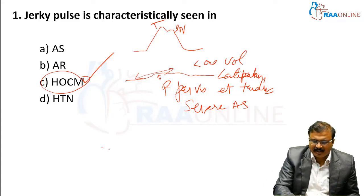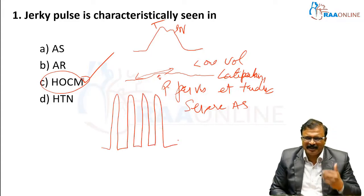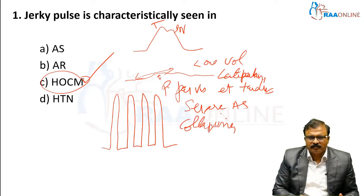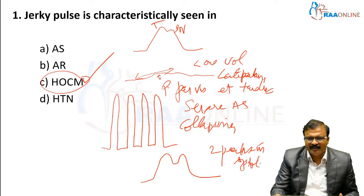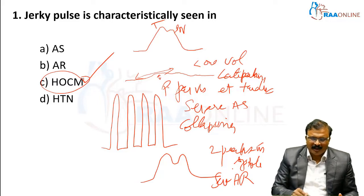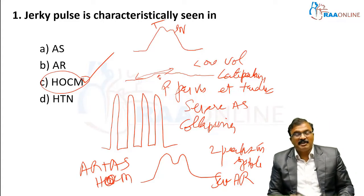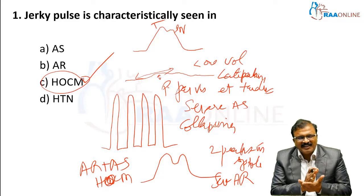In rapid upstroke and rapid collapse, the very classical collapsing pulse is seen in AR. Two peaks in systole — bisferiens pulse — is seen in severe AR, HOCM, or a combined AR plus AS.